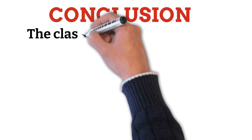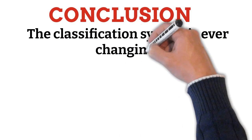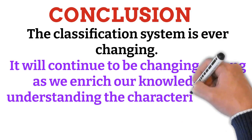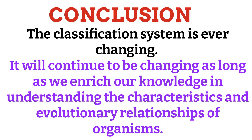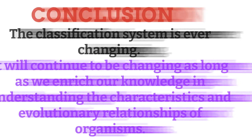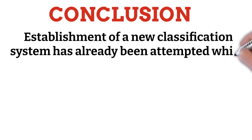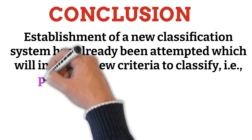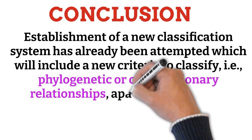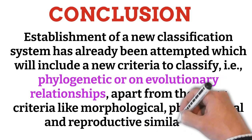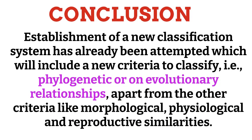Come to the conclusion of this topic. The classification system is ever-changing. It will continue to change as long as we enrich our knowledge in understanding the characteristics and evolutionary relationships of organisms. Establishment of a new classification system has already been attempted, which will include phylogenetic or evolutionary relationships as a new criterion, apart from morphological, physiological, and reproductive similarities.